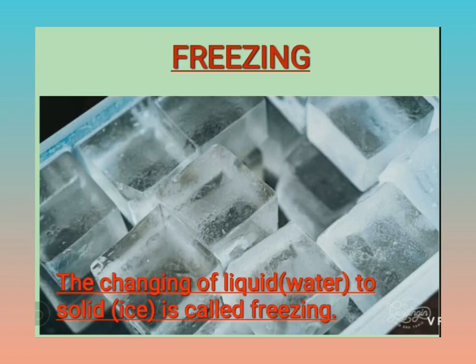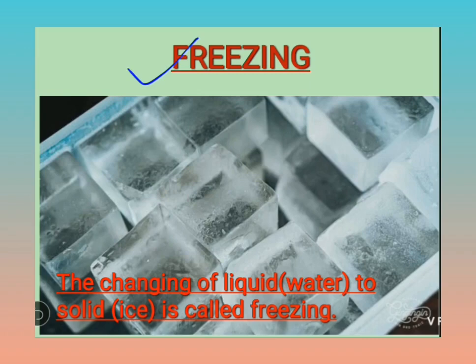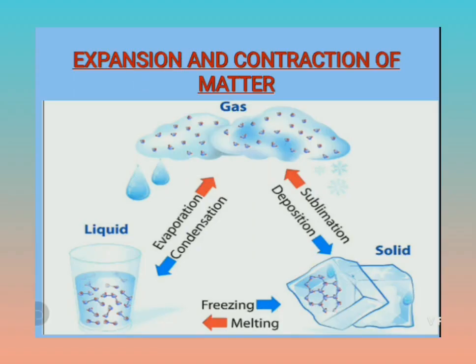Samajh aaya — humne char process padhe. Evaporation mein liquid se gas form ho rahi thi on heating (temperature increase karne ki wajah se). Then condensation mein temperature kam karne se, cool down karne se, gas se liquid form ho raha tha. Then melting mein bhi temperature increase ho raha tha aur solid se liquid form ho raha tha. Then freezing mein temperature kam ho raha hai, cool down kar rahe hain, jis wajah se liquid solid mein convert ho raha hai. Now come to the next topic which is expansion and contraction of matter.